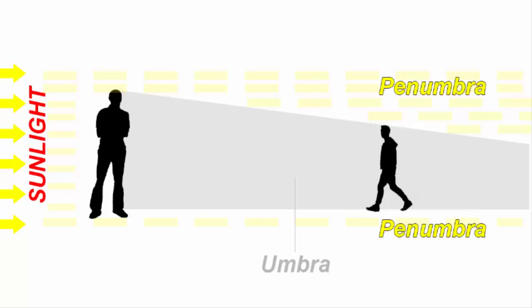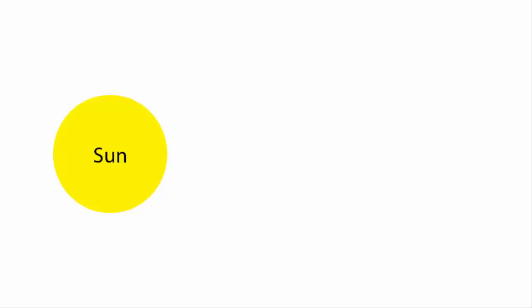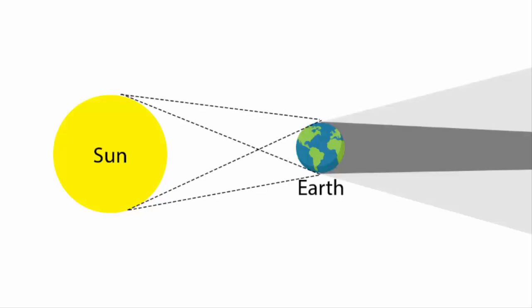And penumbra means the outer region where partial light will fall. And these two definitions have to be seen in context of an eclipse. So if this is the sun and this is the earth, the shadow region of the earth is called umbra. The outer region of umbra is the penumbra.